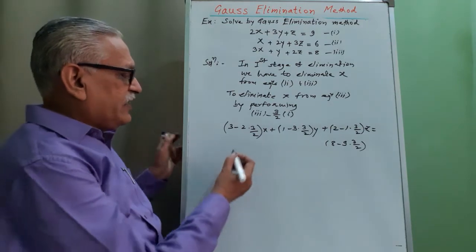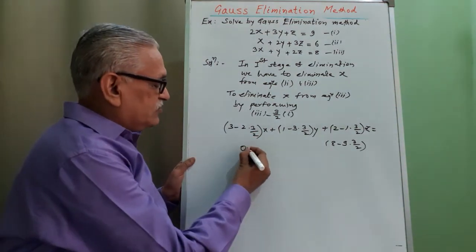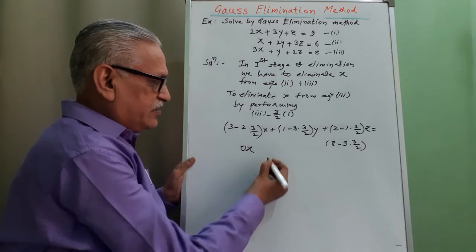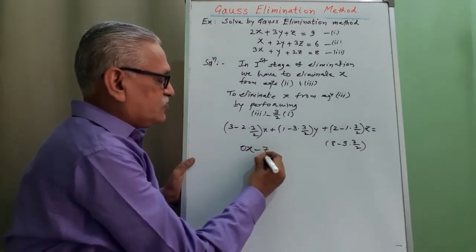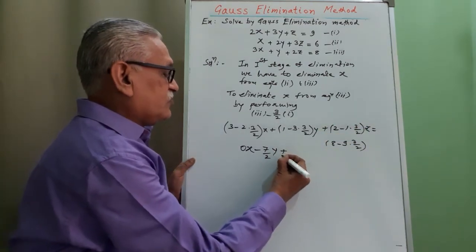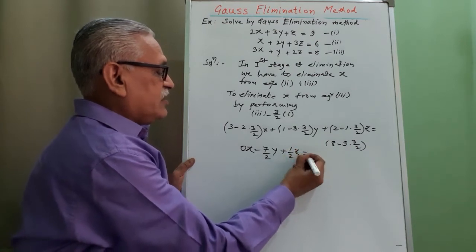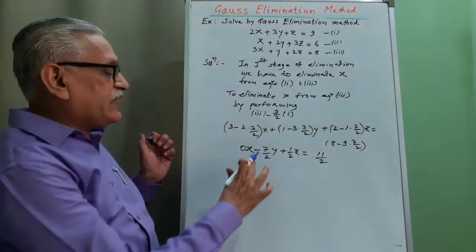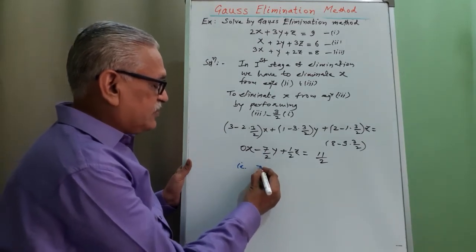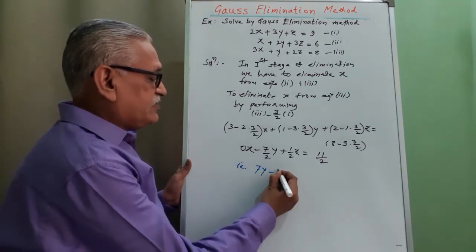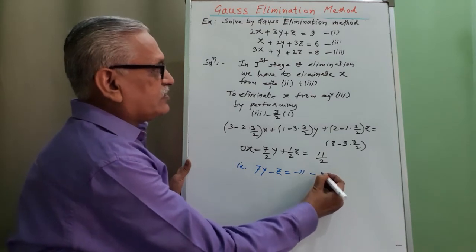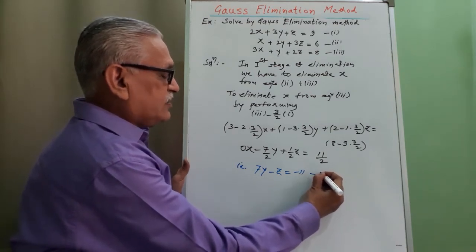Simplifying, 2 cancels, 3 minus 3 gives 0, so 0x. For y: 2 minus 9 gives minus 7 by 2 into y. For z: 4 minus 3 gives 1 by 2 into z. That is equal to minus 11 by 2. Multiplying by minus 2 throughout, we get the equation: 7y minus z equals minus 11. We call this new equation 5, replacing equation 3.